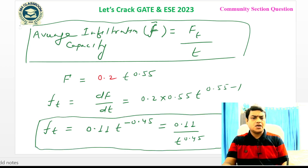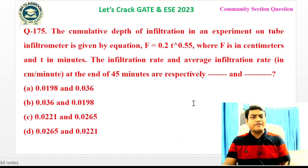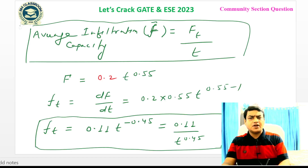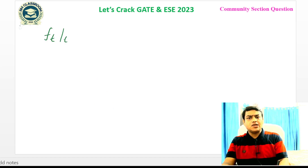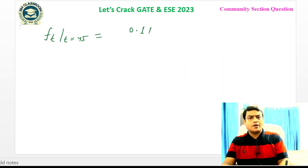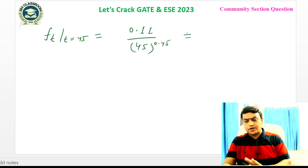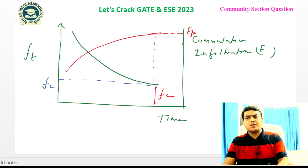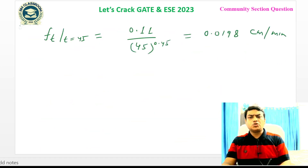This is the equation for infiltration capacity at any time T. To find infiltration rate at the end of 45 minutes, substitute T = 45: ft = 0.11 / 45^0.45 = 0.0198 cm per minute, since F is in cm and T is in minutes.